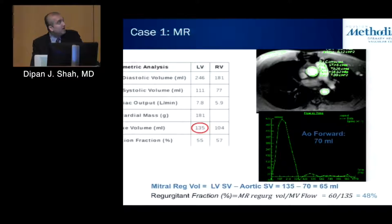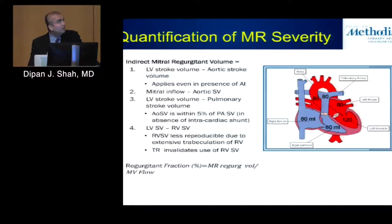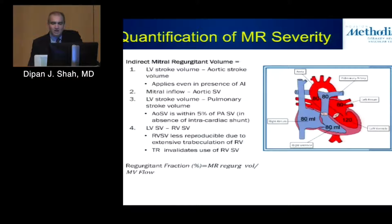This example case shows how we planimeter the end-diastolic and end-systolic volumes to derive LV stroke volume, as well as the forward flow across the aorta using phase contrast, and then compute the regurgitant volume and fraction. We also have multiple internal consistency checks — directly performing phase contrast across the mitral valve and comparing to forward flow across the aortic valve, or comparing LV stroke volume by planimetry to phase contrast stroke volume across the pulmonic valve — multiple methodologies to corroborate the findings.